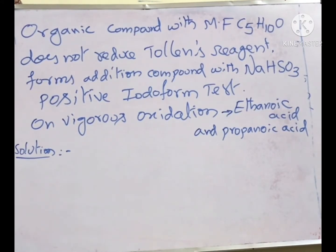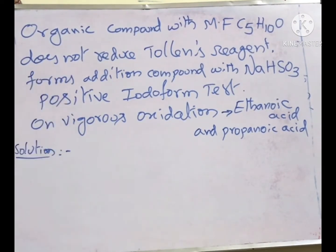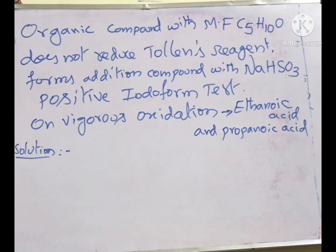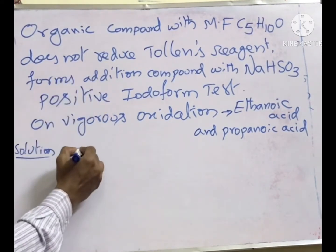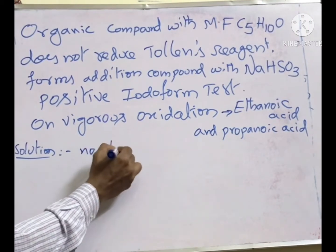If the compound is not reducing Tollens reagent, that means it is not an aldehyde. The aldehyde will reduce both Tollens reagent and Fehling's reagent. In Tollens reagent, it gives a silver mirror — silver is formed; it forms Ag. When it reacts with aldehyde it converts to silver. So this compound is not an aldehyde — no aldehyde.